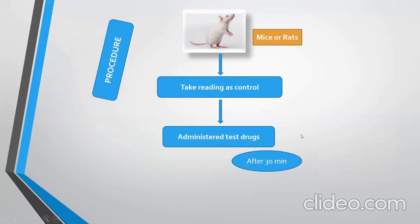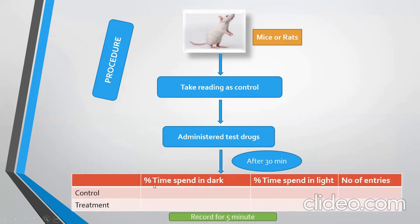After administration of the test drug, allow the animal 30 minutes, then again place the animal into the light compartment and observe the parameters. The parameters to be evaluated are: percent time spent in the dark compartment, percent time spent in the light compartment, and the number of entries between the light and dark compartment. The whole evaluation is conducted for 5 minutes.